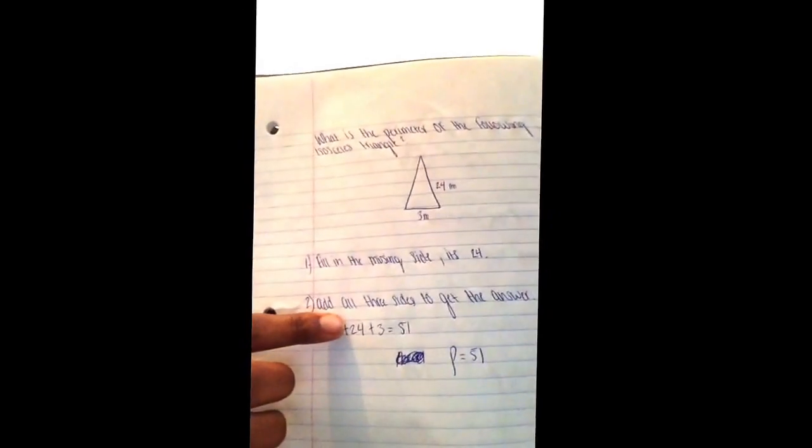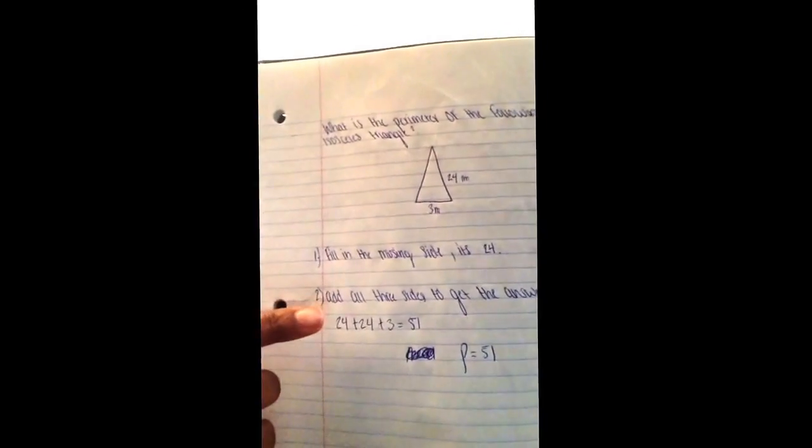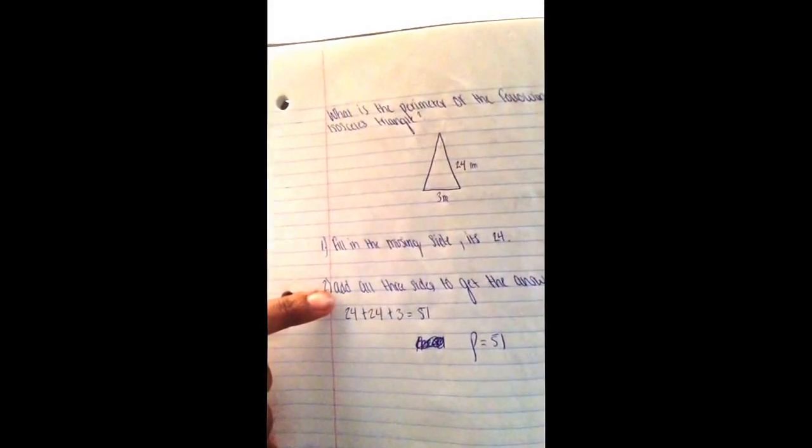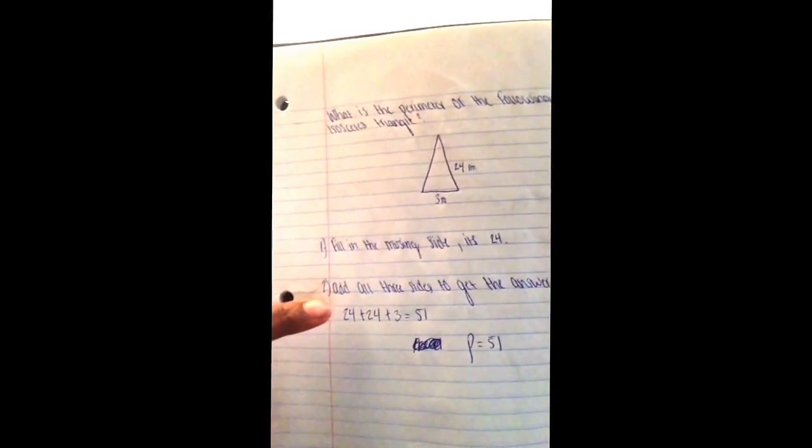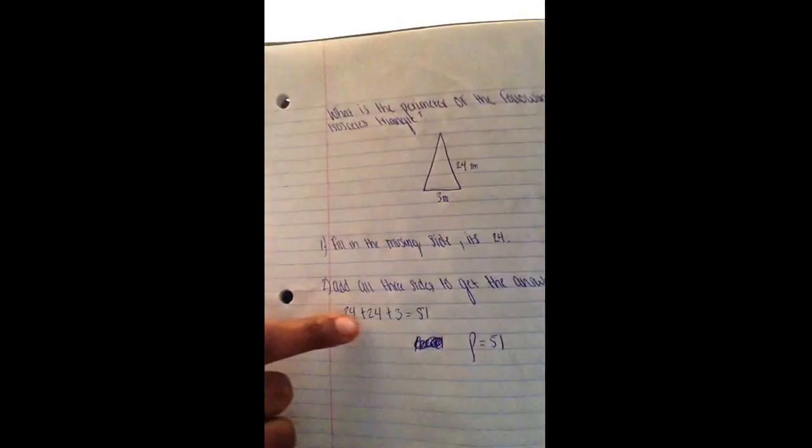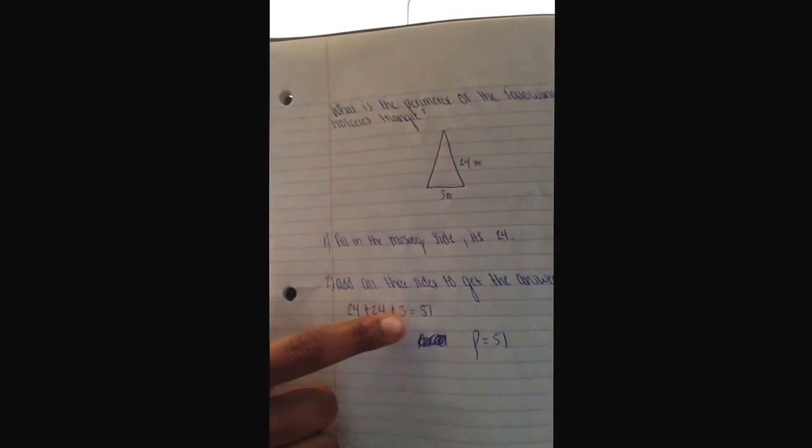So the second thing you want to do since it's a perimeter, you have to add all the sides. So it's 24 plus 24 plus 3 and that gives you 51. So the answer is 51.